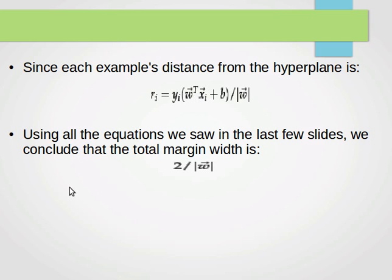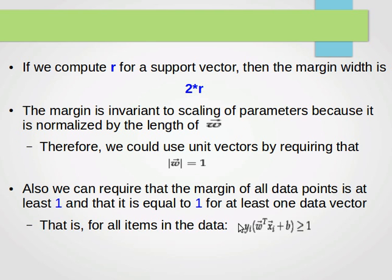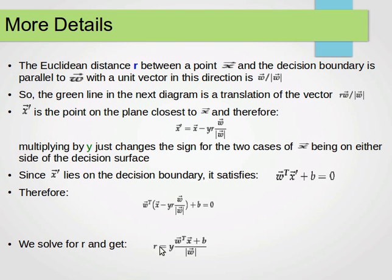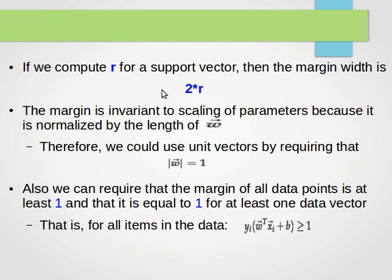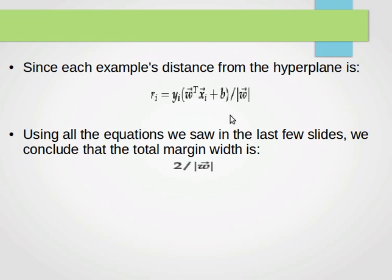Since each example's distance from the hyperplane is r_i as computed before, and the distance for the support vector is a minimum of one, we conclude that the total margin width is 2 over the magnitude of w. That's because r for the support vector is 1 over |w|, and the total width is twice that value.